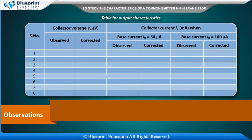Table for output characteristics: Serial number. Collector voltage VCE (volt) — observed, corrected. Collector current IC (milli-ampere) when base current IB is equal to 50 micro-ampere — observed, corrected. Base current IB is equal to 100 micro-ampere — observed, corrected.